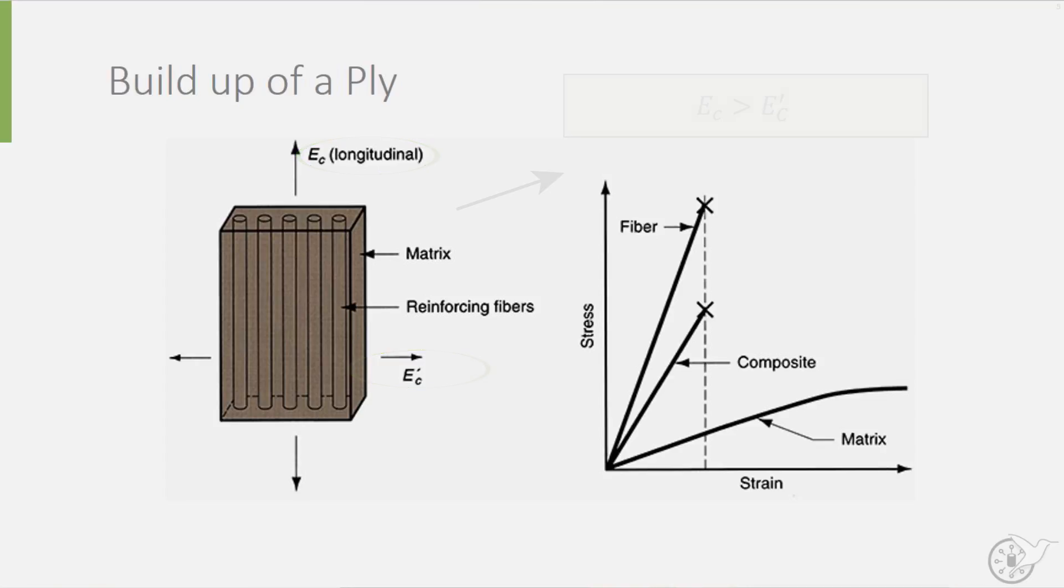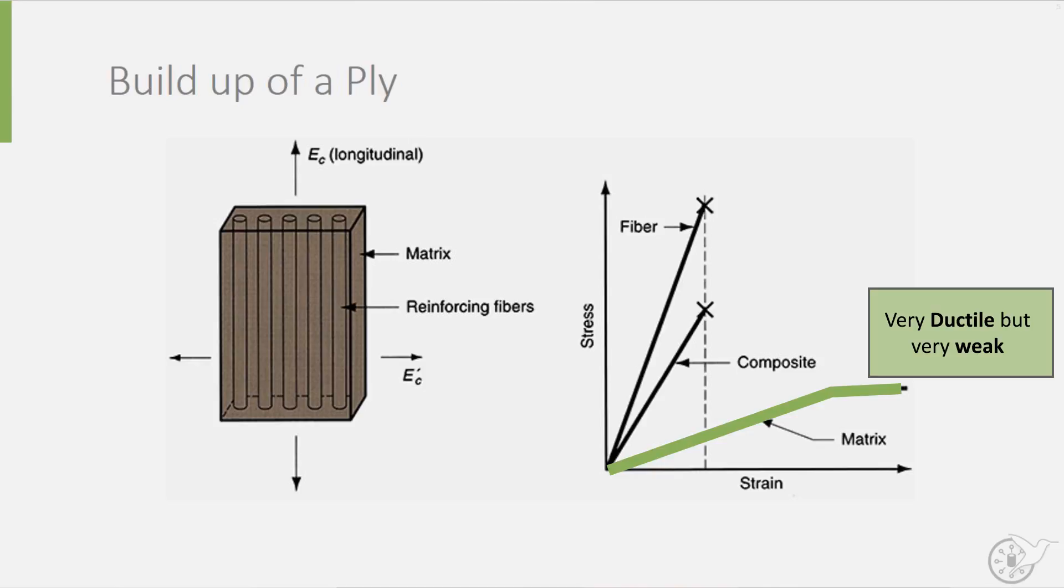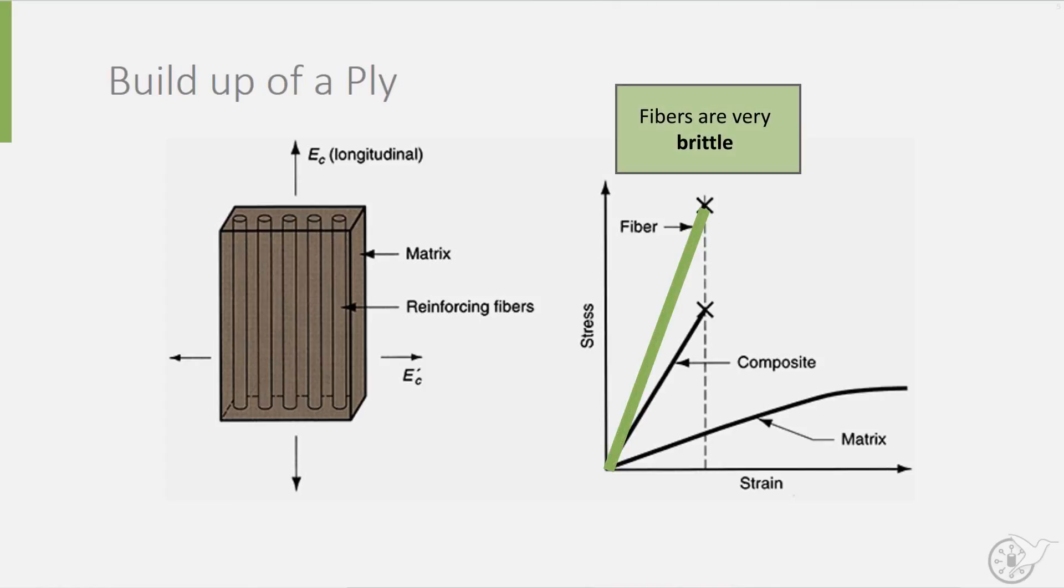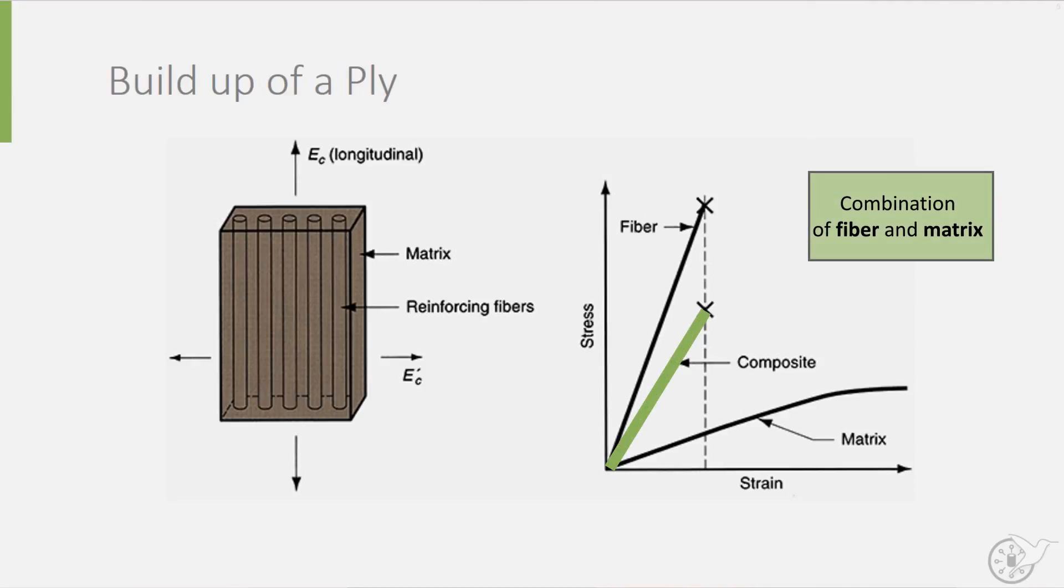If we look at the stress-strain diagram, we can see three lines. The lower one is the curve of the matrix material, which is very ductile but not very strong. The upper curve shows the behavior of the fibers on their own. As you can see, the fibers are very brittle. The middle curve is what you get if you combine the two into a ply.